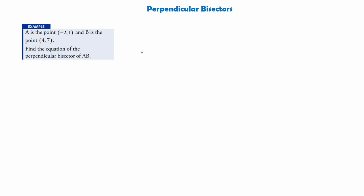Like we did with medians and altitudes, the best way to work out the equation of a perpendicular bisector of a line AB is by doing three simple steps. This example says: A is the point (-2, 1) and B is the point (4, 7). Find the equation of the perpendicular bisector of the line AB.